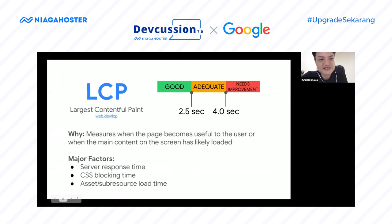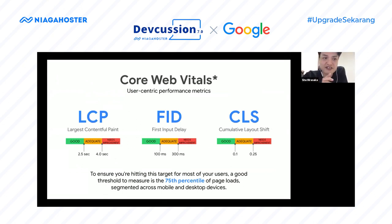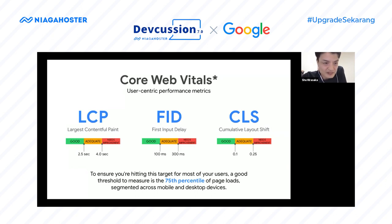With these three areas, we set a metric for each, and each metric has its own threshold. Your web page is assessed based on your score against these three metrics. For example, if your page's loading speed is faster than 2.5 seconds, your site is assessed as good with a green color. If it takes longer than three seconds, then you get yellow, which is adequate. This is the basic concept of how Core Web Vitals works.